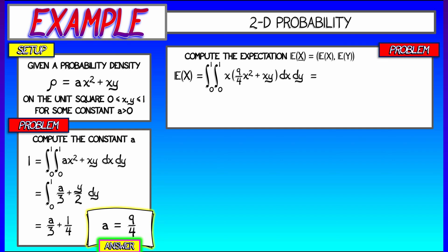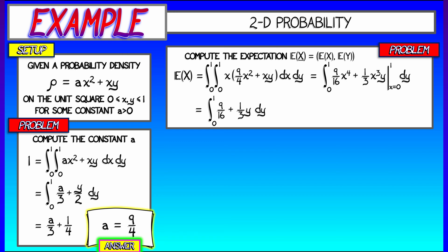When I do the first integral with respect to X, I get 9 fourths times X to the fourth over 4, and then X cubed Y over 3. Evaluating as X goes from 0 to 1 gives 9 sixteenths plus 1 third Y. Integrating that with respect to Y gives 9 sixteenths Y plus Y squared over 6. Plugging in Y equals 1 and subtracting Y equals 0, I get 35 forty-eighths.